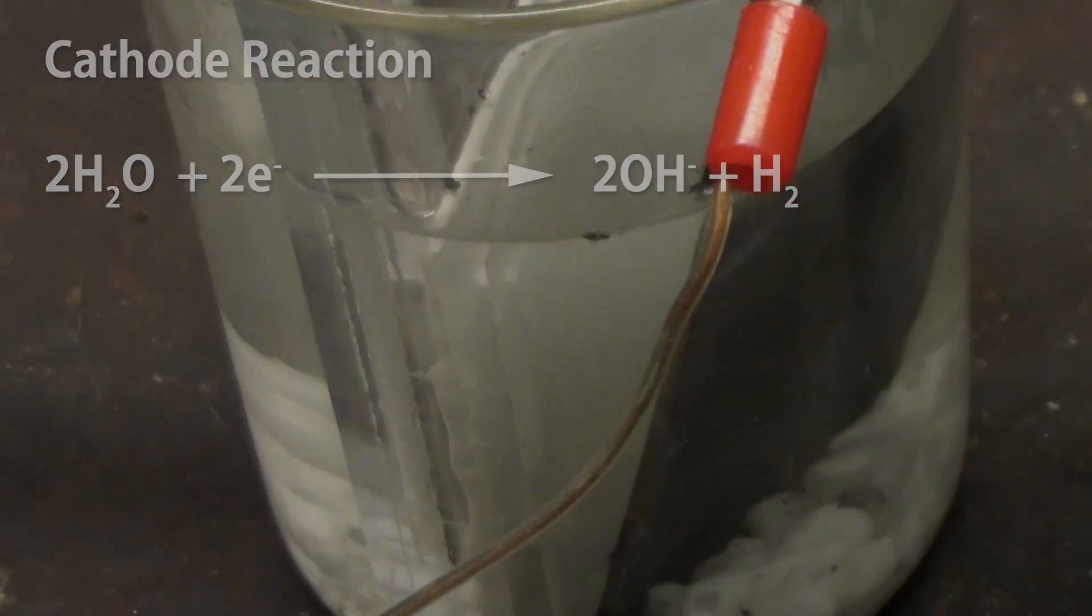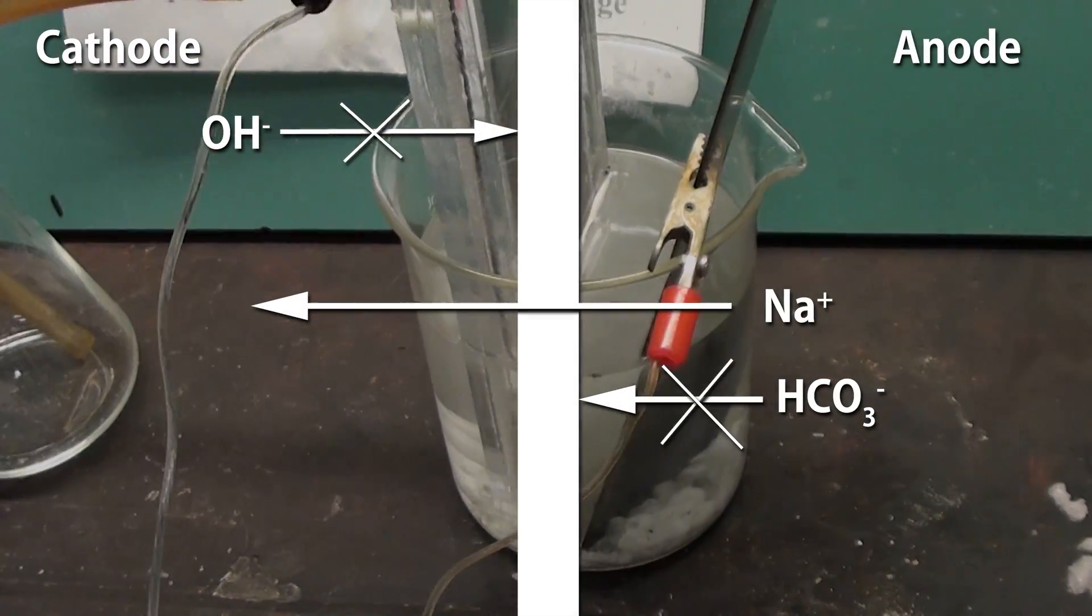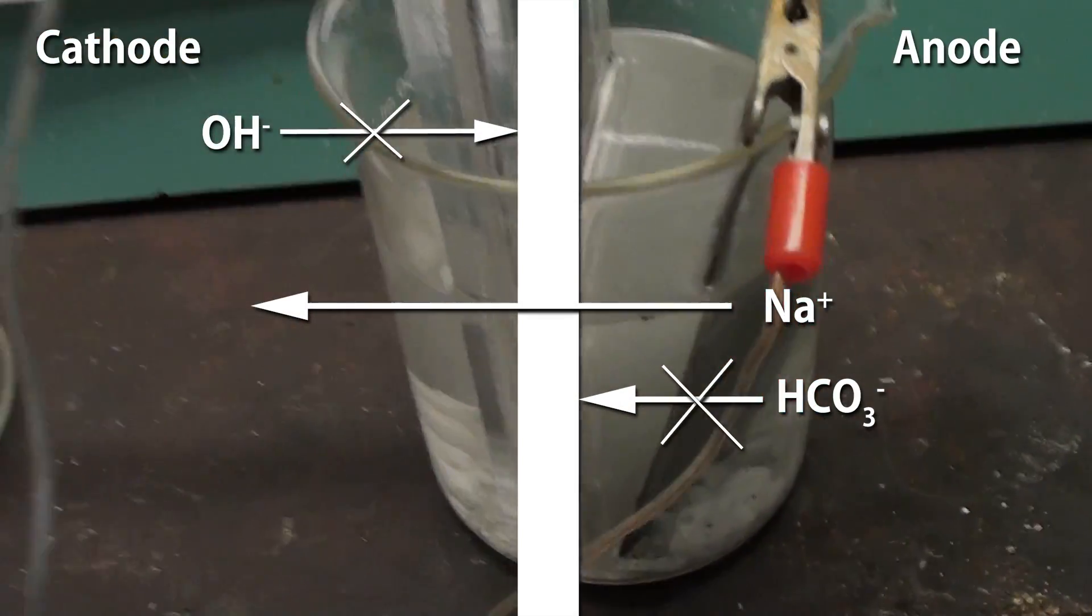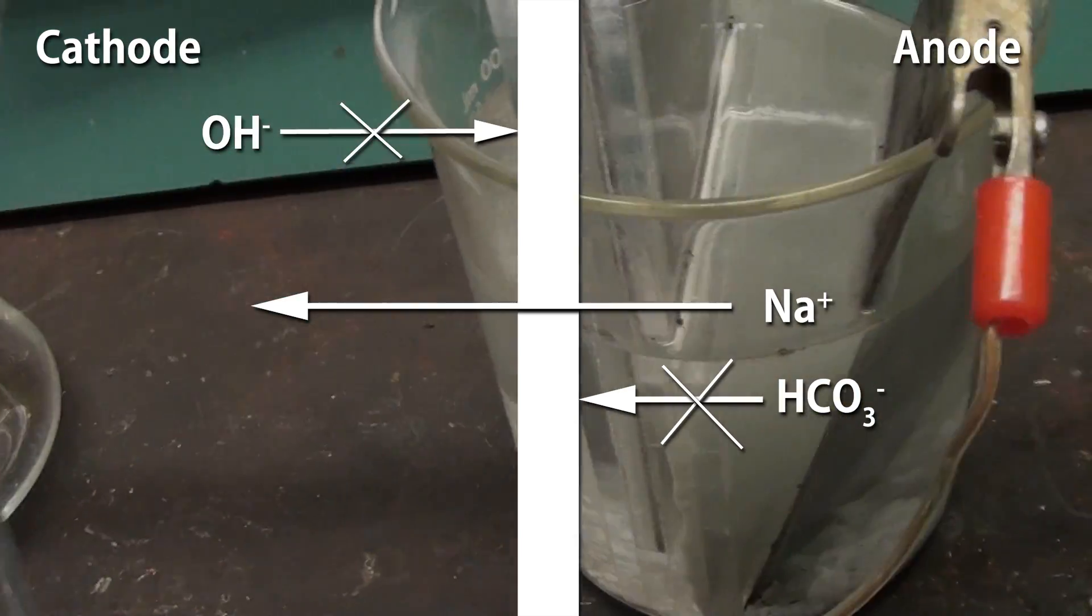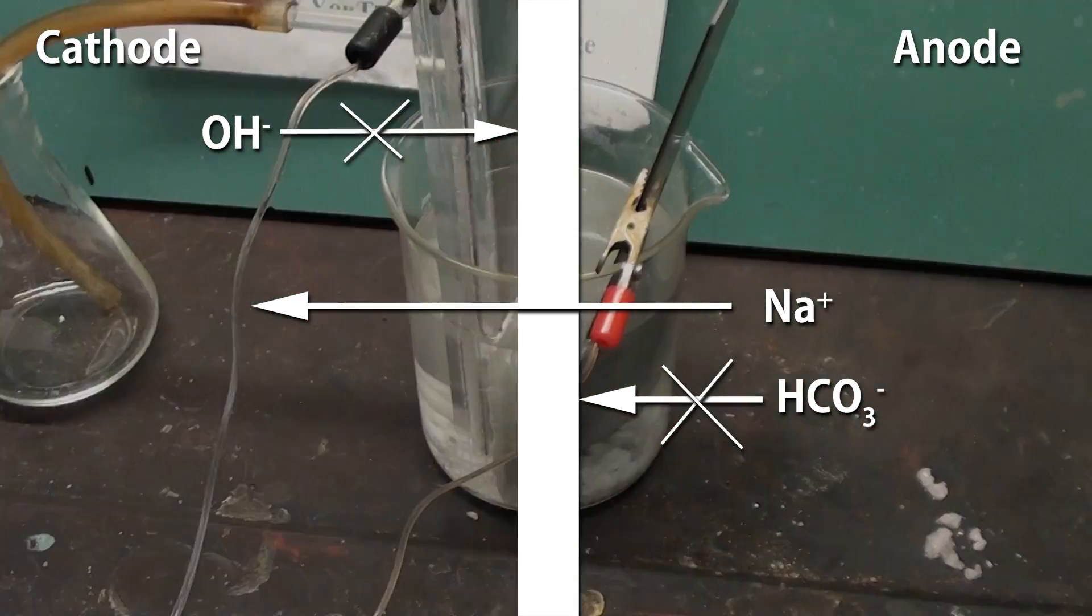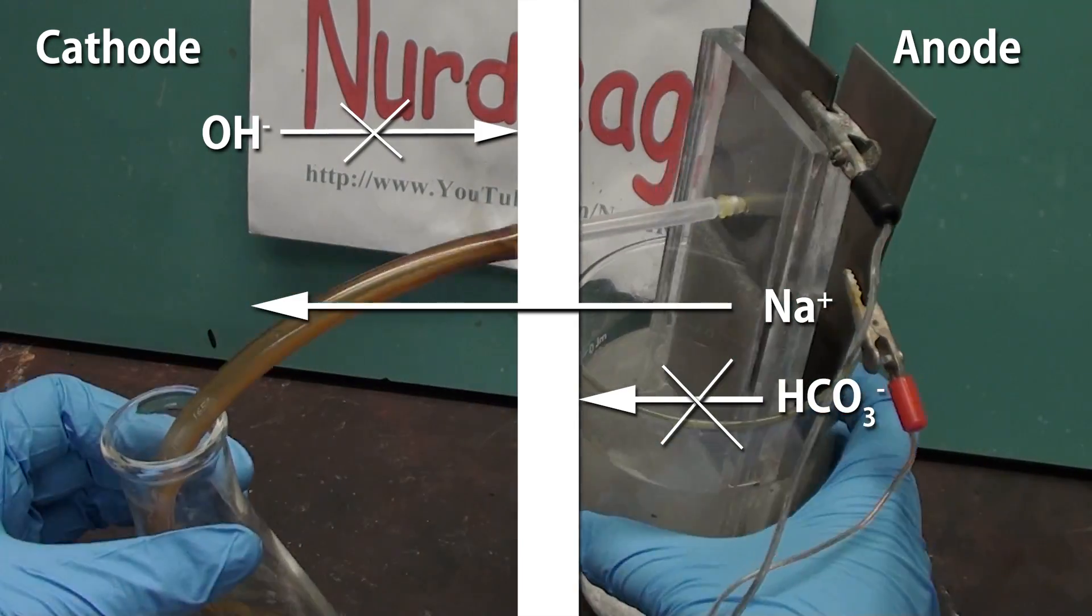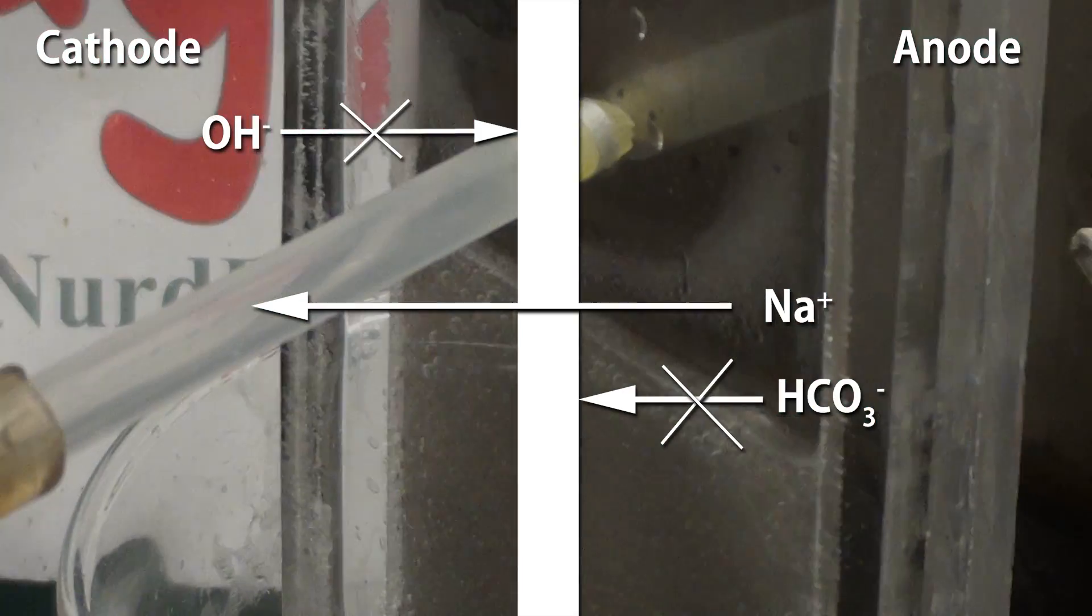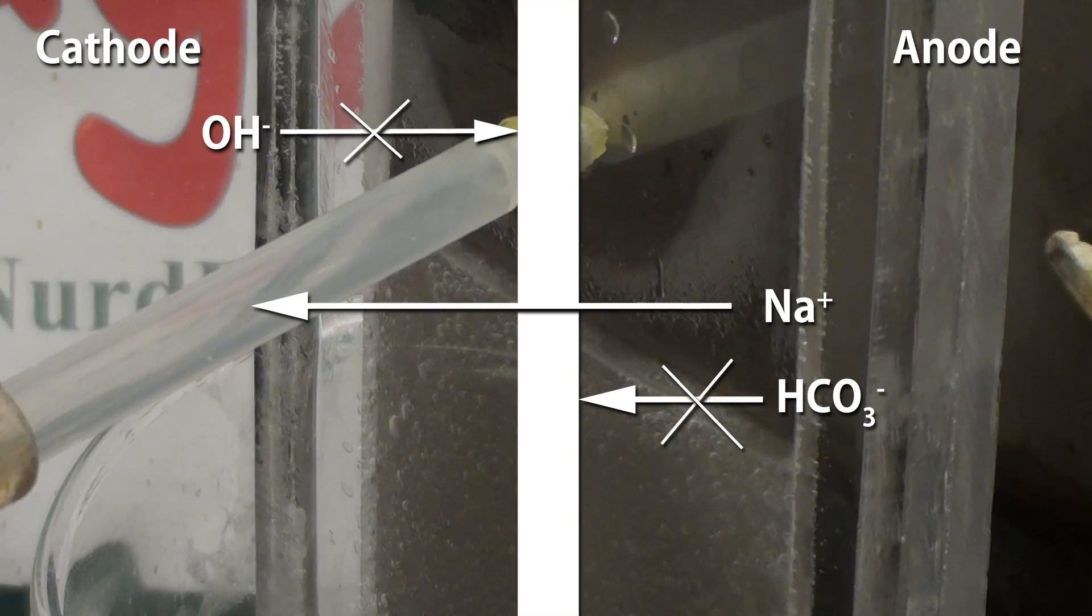But the amazing stuff happens at the membrane. As hydroxide builds up in the cathode compartment, charge balance must be maintained. You cannot have a significant imbalance of charge. The anionic hydroxide ions cannot cross the cationic exchange membrane. But the cationic sodium ions can.